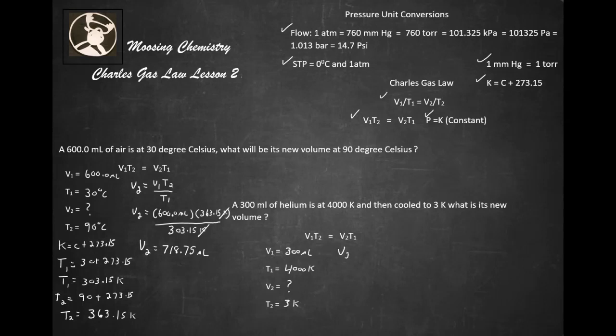Let's go ahead and isolate for V2 because we're ready to work this problem. V2 equals V1 T2 over T1, so V2 equals 300 milliliters times 3 Kelvin divided by 4000 Kelvin.